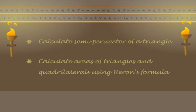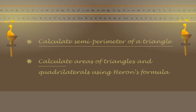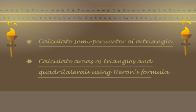In this chapter you will learn to calculate semi-perimeter of a triangle and calculate areas of triangles and quadrilaterals using Heron's formula.